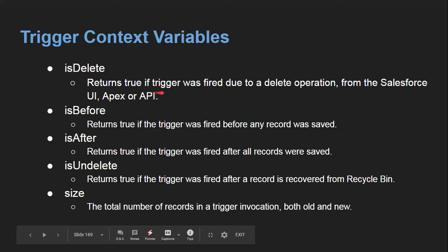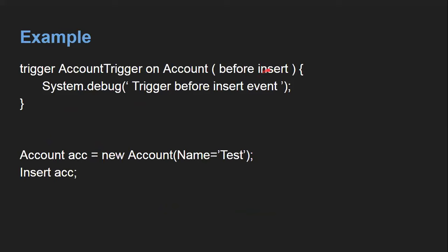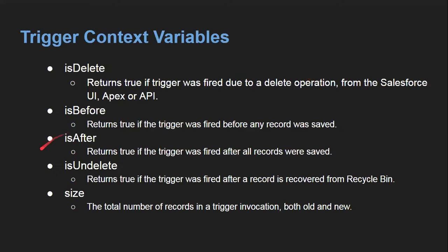'isDelete' returns true if the trigger was fired due to a delete operation from Salesforce UI, Apex, or API. 'isBefore' returns true if the trigger was fired before any record was saved. 'isAfter' returns true if the trigger was fired after all records were saved — this needs to be mentioned in the first line of the trigger as in our previous example. 'isUndelete' returns true if the trigger was fired after a record is recovered from the recycle bin. 'size' is the total number of records in the trigger invocation, both old and new.